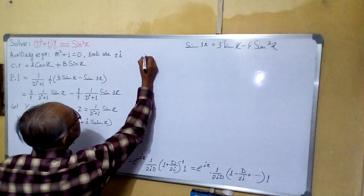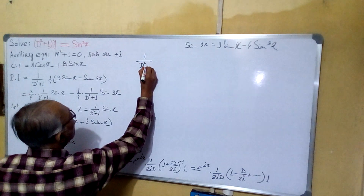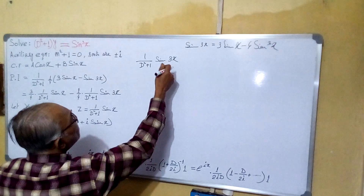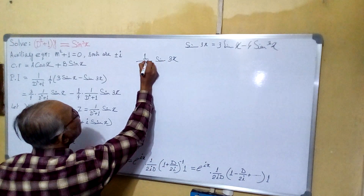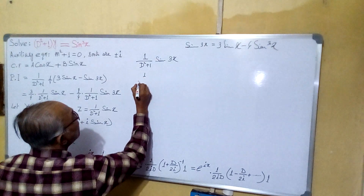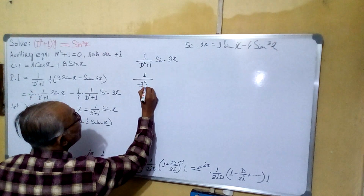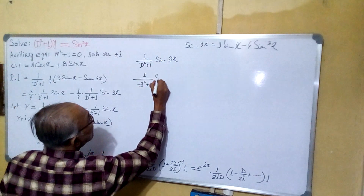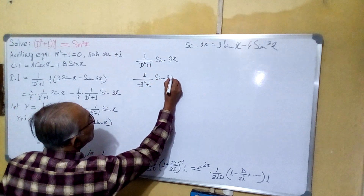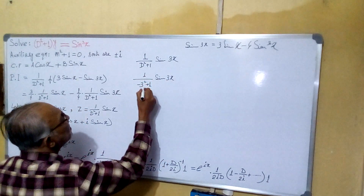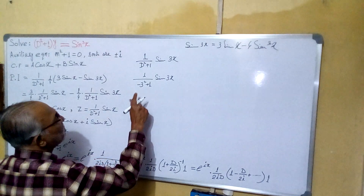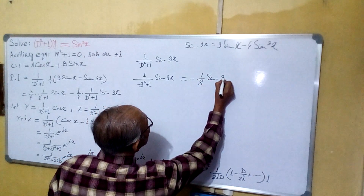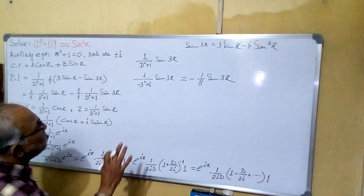First, let's find 1/(D² + 1) · sin 3x. Using the standard result, we substitute D² = −a² where a = 3, giving 1/(−3² + 1) = 1/(−9 + 1) = 1/(−8). Be careful: it is −a² (not −(a²) confusion), so −3² = −9. Therefore 1/(D² + 1) · sin 3x = −(1/8) sin 3x.